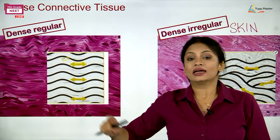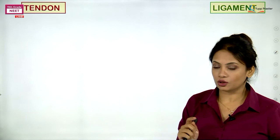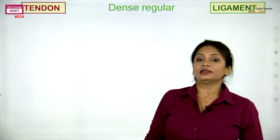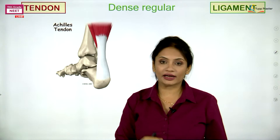Now let us see the examples for dense regular connective tissue. We have two examples: one being a tendon and second being a ligament. What is the difference? Tendon is a structure which helps to join the muscle with the bone. Muscles are generally soft, but they help in giving strength.